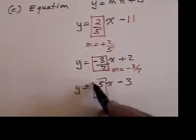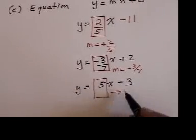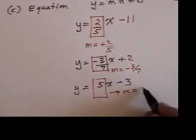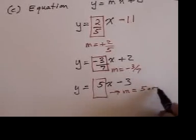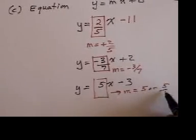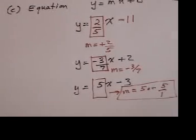Here, the slope is the number in front of the x, with its sign. And we would write this as a 5, or you could put a 5 over a 1. Sometimes it's useful to write it with a denominator.